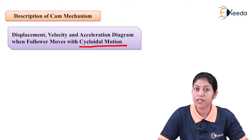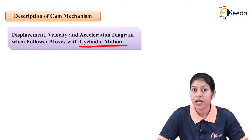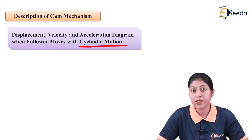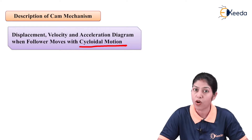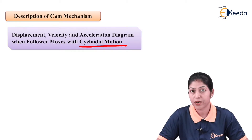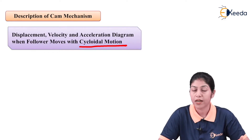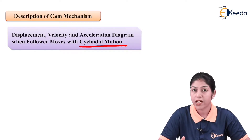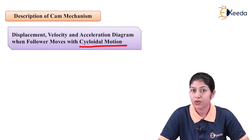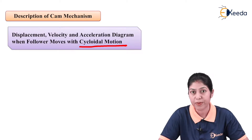Now we want to define the cycloidal motion of the follower. The displacement of the follower is considered on the basis of cam rotation and the shape of the cam. The displacement of the follower is divided into four parts: outstroke, dwell period, return stroke, and again dwell period. So the angular displacement of cam is divided into outstroke, return stroke, and two dwells.